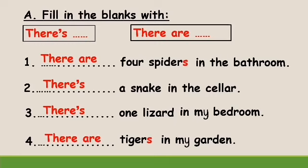Now, let's read the sentences together. Number one: there are four spiders in the bathroom. Number two: there's a snake in the cellar. Number three: there's one lizard in my bedroom. Number four: there are tigers in my garden.